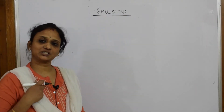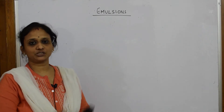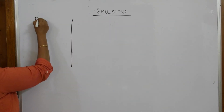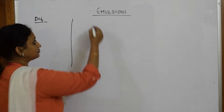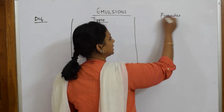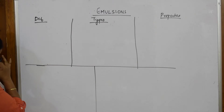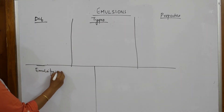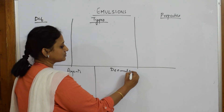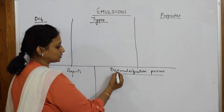Let's come back and start the emulsions topic. It's a small topic but remember they may ask you any type of question from this. I'll be teaching you the complete concept of emulsions. Let me divide the board first — I'm going to make columns for: definition, types, properties, emulsifying agents, and the emulsification process.